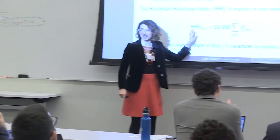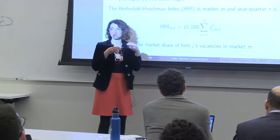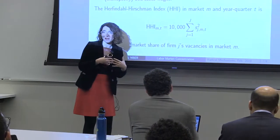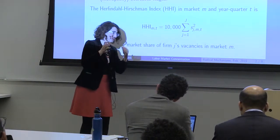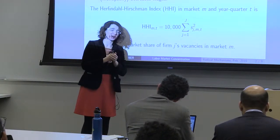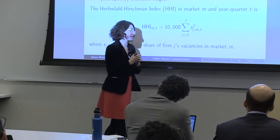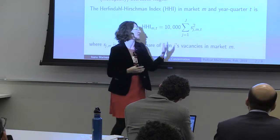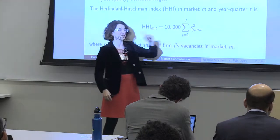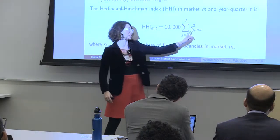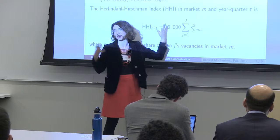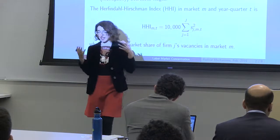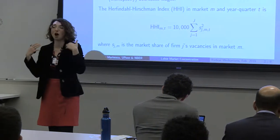If there are many tech companies hiring Java programmers, the HHI index is going to be very small. If there are just a few companies, it's going to be bigger. In the extreme, if there's just one company, the index is 10,000 — that's the most concentrated case.